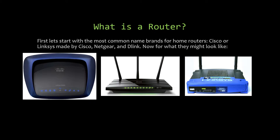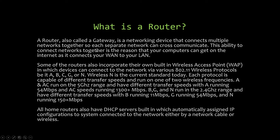The most common name brands for home routers are Cisco and Linksys, which is made by Cisco. This E3000 right here is a very common router found in most homes — this is the older-style Linksys before they moved strictly to the Cisco name. These were the most common ones back in the day; the newer styles are less common unless someone wants really good performance.